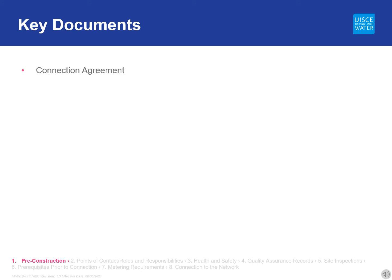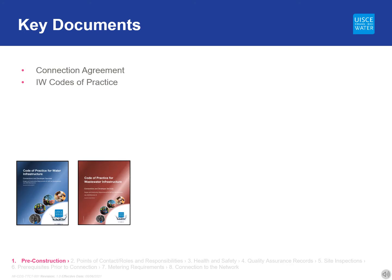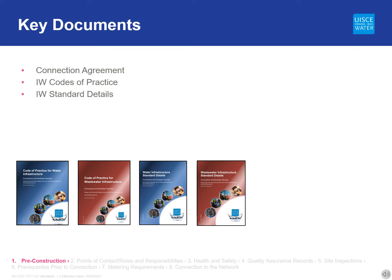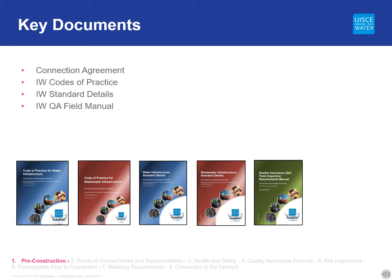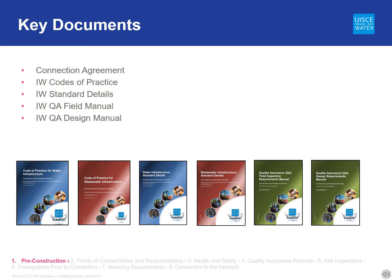The developer must be familiar with the contents of the connection agreement and must comply with its requirements. The Irish Water technical guidance documents are given to the developer on a USB stick when the connection agreement is issued. The documents are: Codes of Practice for Water and Wastewater, Standard Details for Water and Wastewater, Irish Water Quality Assurance Field Manual, and Irish Water Quality Assurance Design Manual. These documents are also available on the Irish Water website in the Technical Guidance section of the Developer Services web page. Irish Water recommends that all personnel involved with the development are familiar with the Codes of Practice and Standard Details documents.